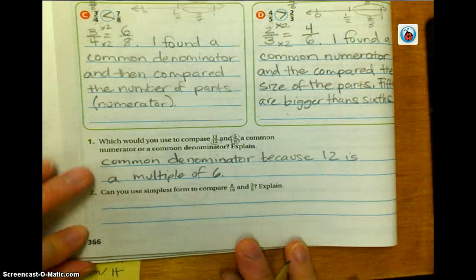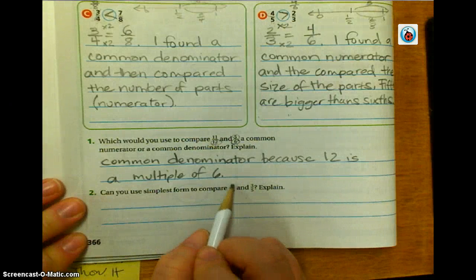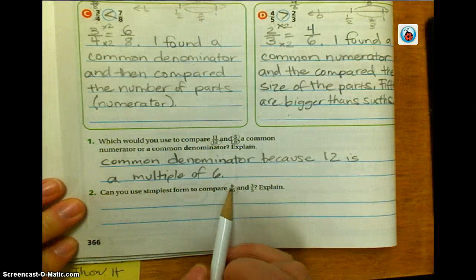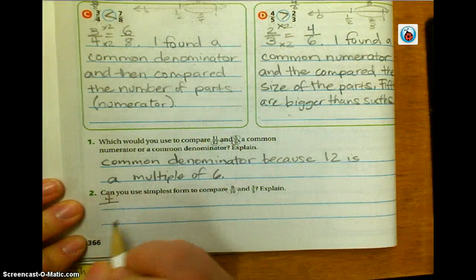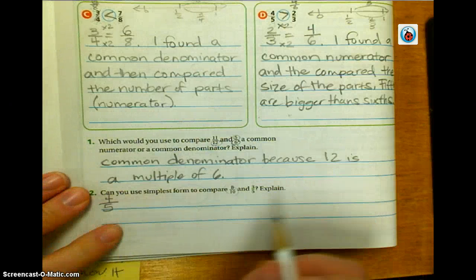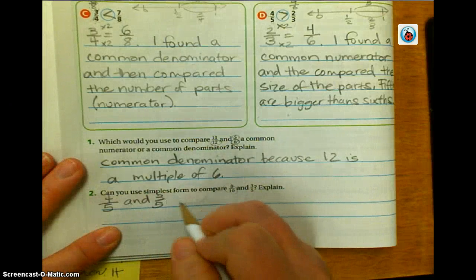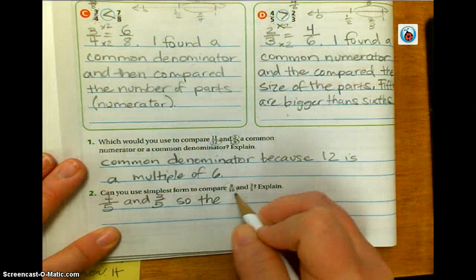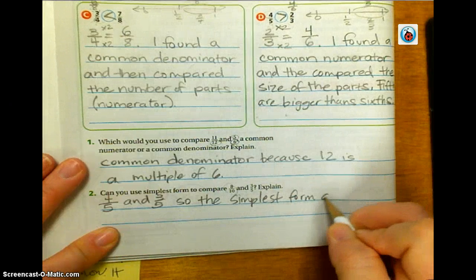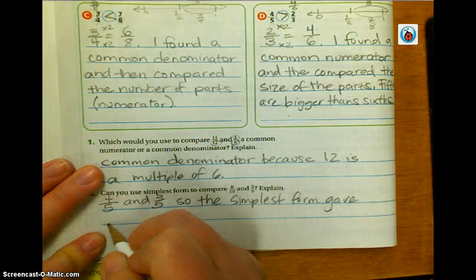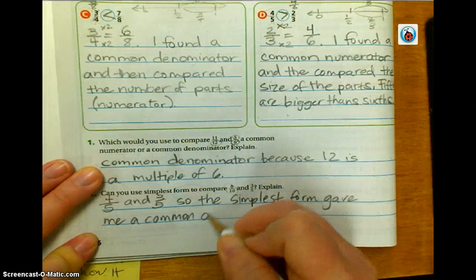The last question: can you use simplest form to compare eight-tenths and three-fifths? Yes — if I simplify eight-tenths, I can divide both by two. Eight divided by two is four, and ten divided by two is five. Now I'm comparing four-fifths and three-fifths. So putting the fraction in simplest form gave me a common denominator.